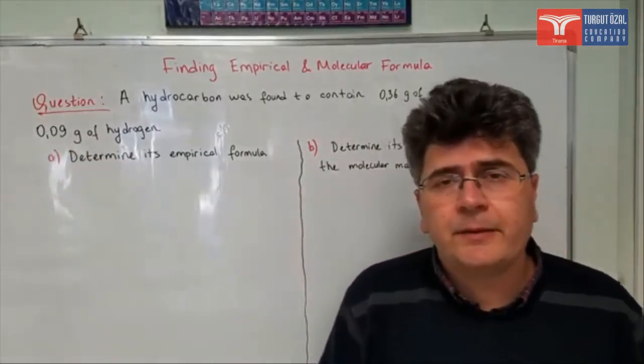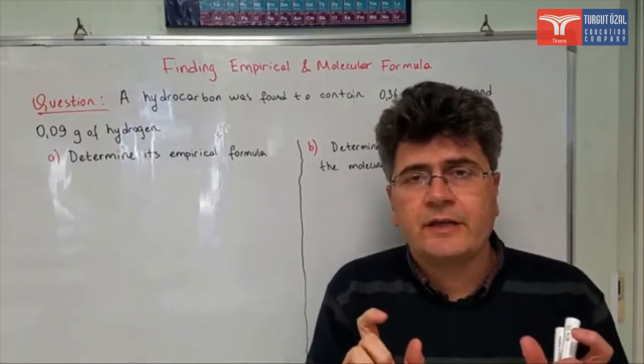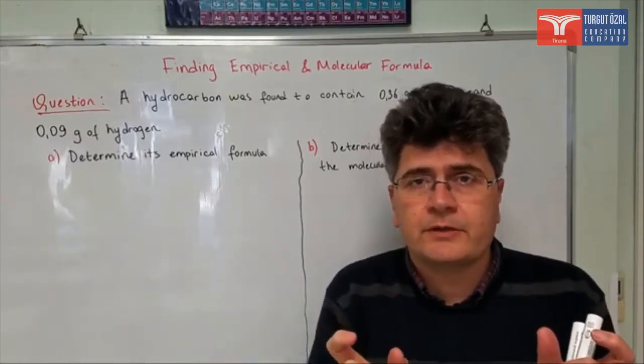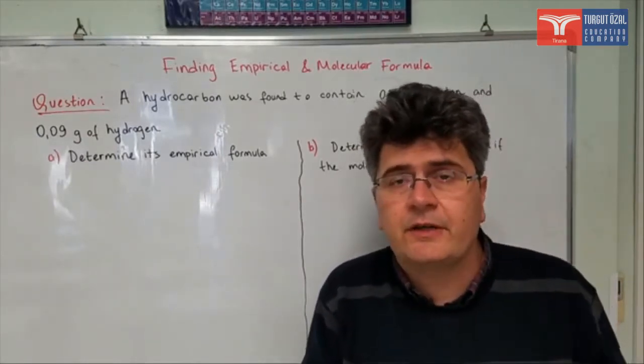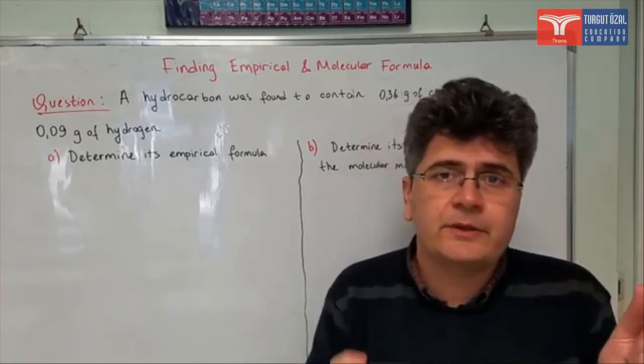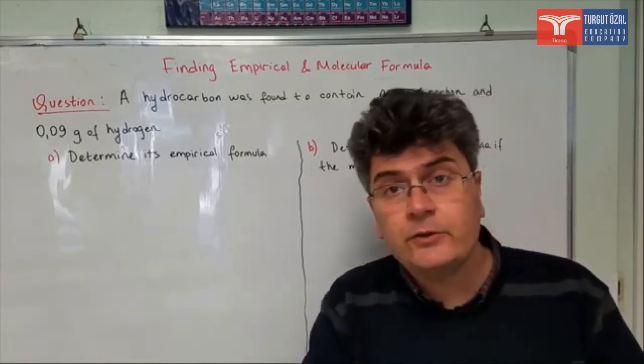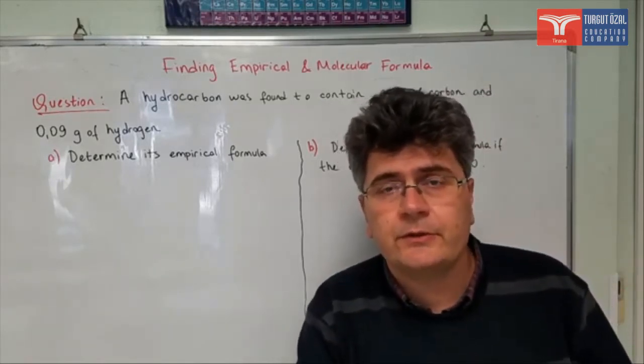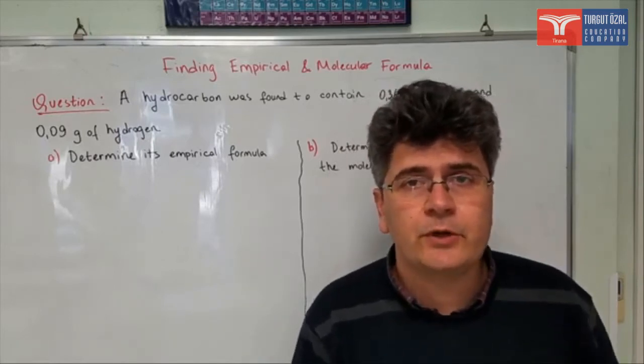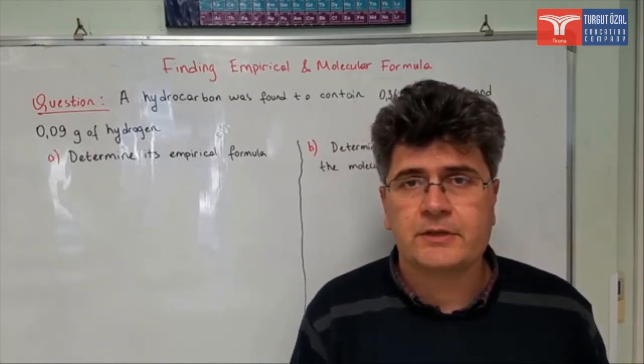As you remember, the empirical formula gives us the ratio between the components. Since we have a hydrocarbon here, the ratio between carbon and hydrogen atoms. In order to find the ratio between those, what you need to do is find the mole numbers of both elements.